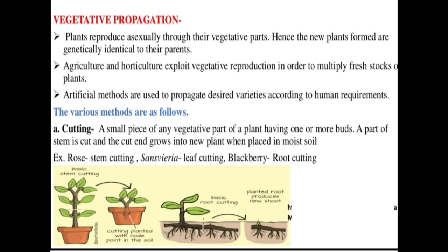In vegetative reproduction, the new plant formed is genetically identical to its parent. There is no difference seen compared to the parent plant. For example, if we take a cutting from a rose plant, the new plant produced from it will be genetically identical to the parent. Therefore, the plant formed by vegetative reproduction is genetically identical to its parents.